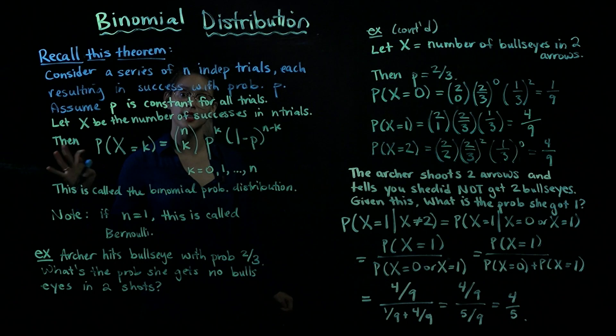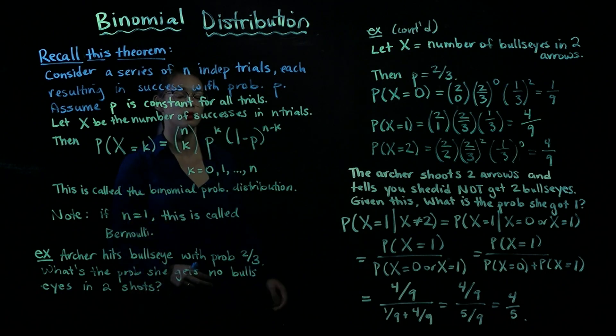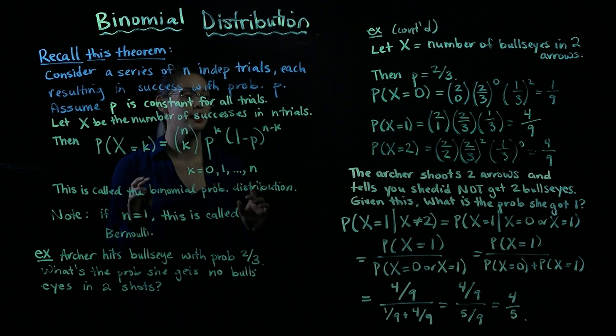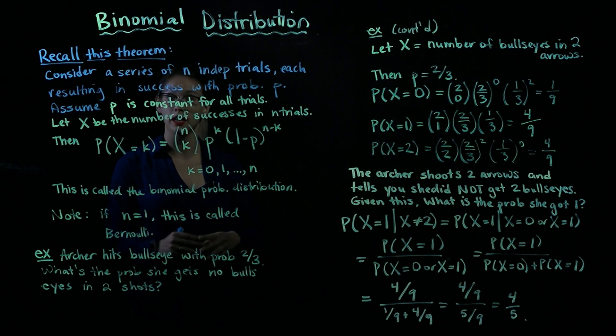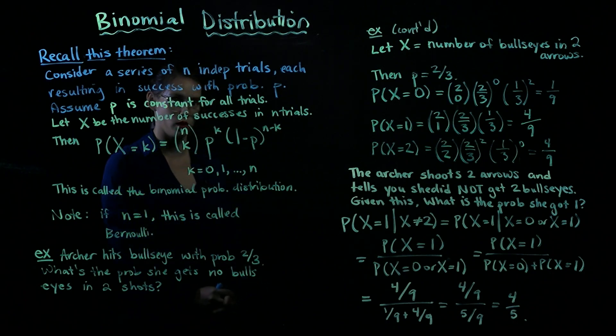Now let's tie conditional probability back in here. So the archer, same archer, same sort of setup, is going to shoot two arrows, and you don't get to look. And now she shoots them. She tells you she did not get two bullseyes. Given this information that she did not get two bullseyes, what's the probability that she got exactly one bullseye?